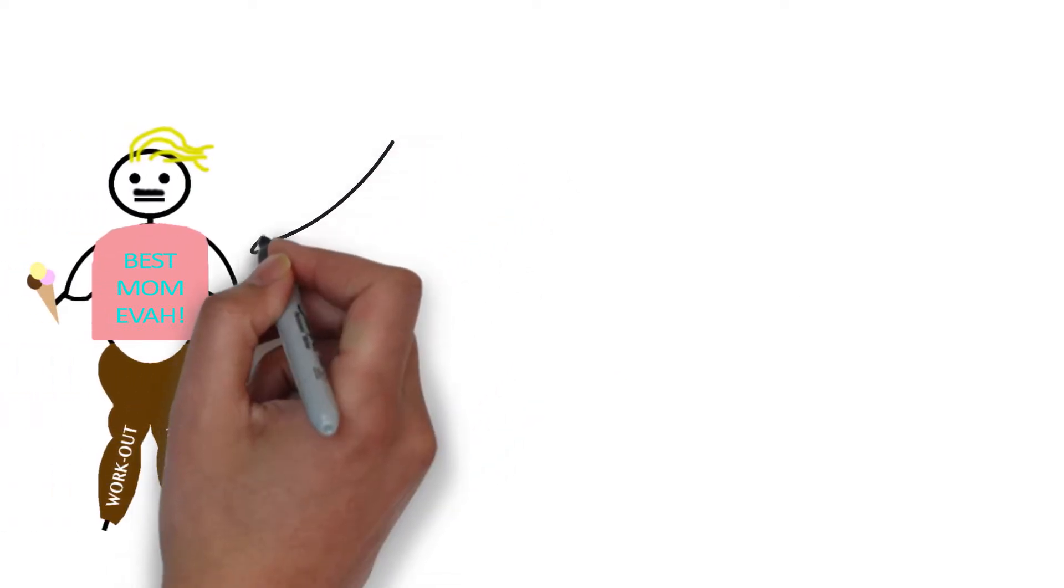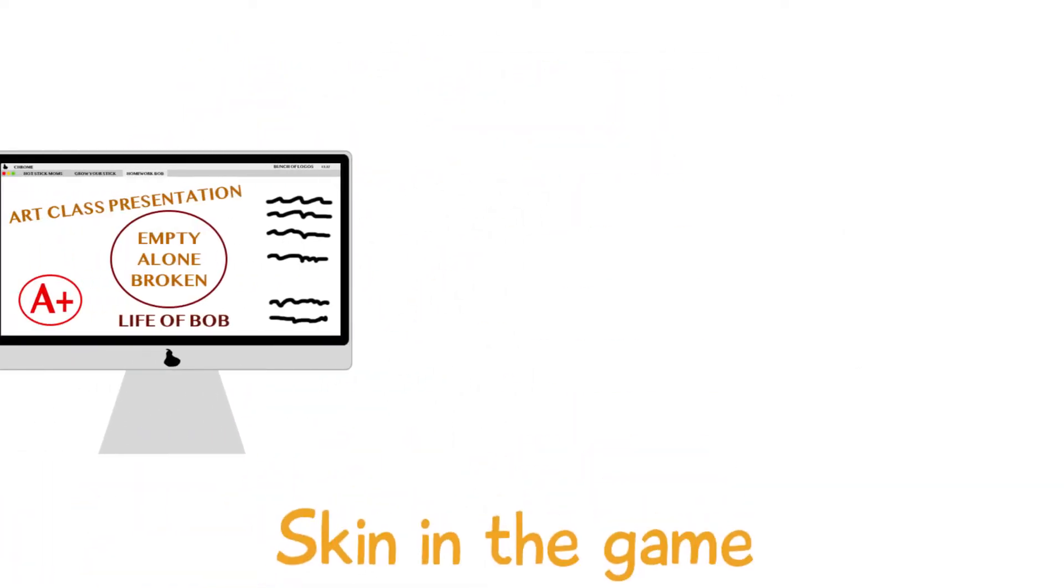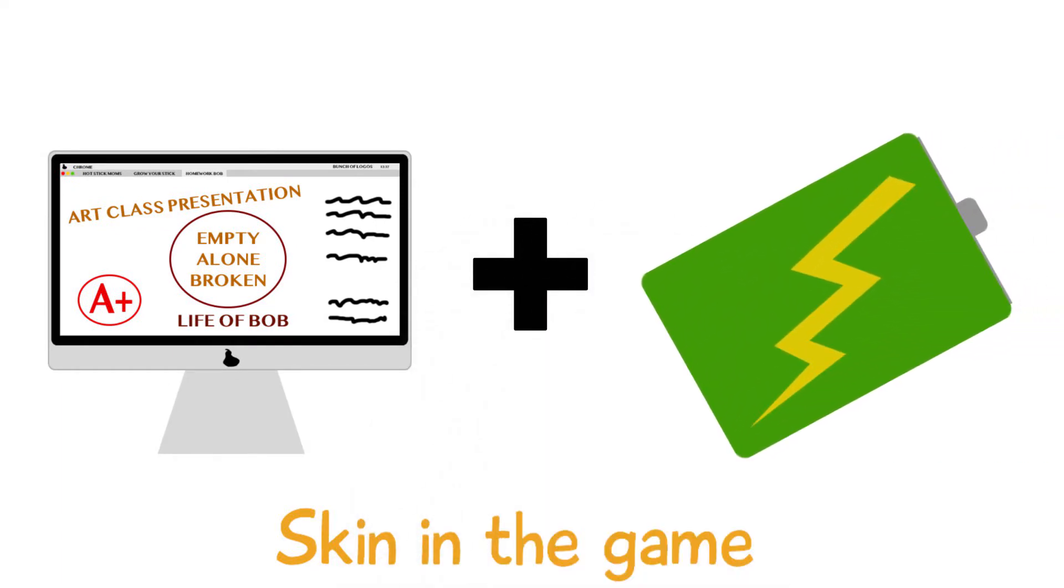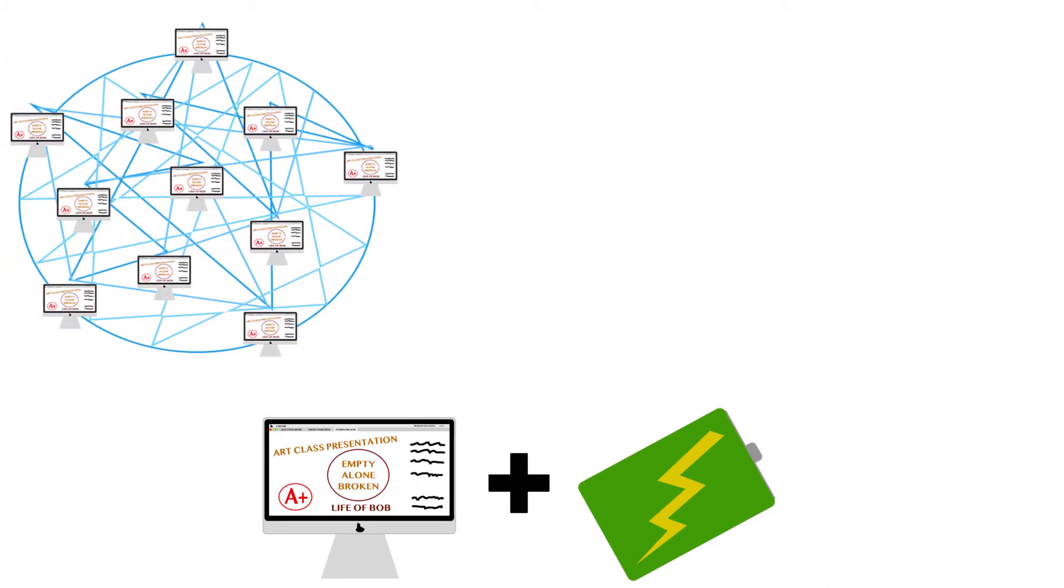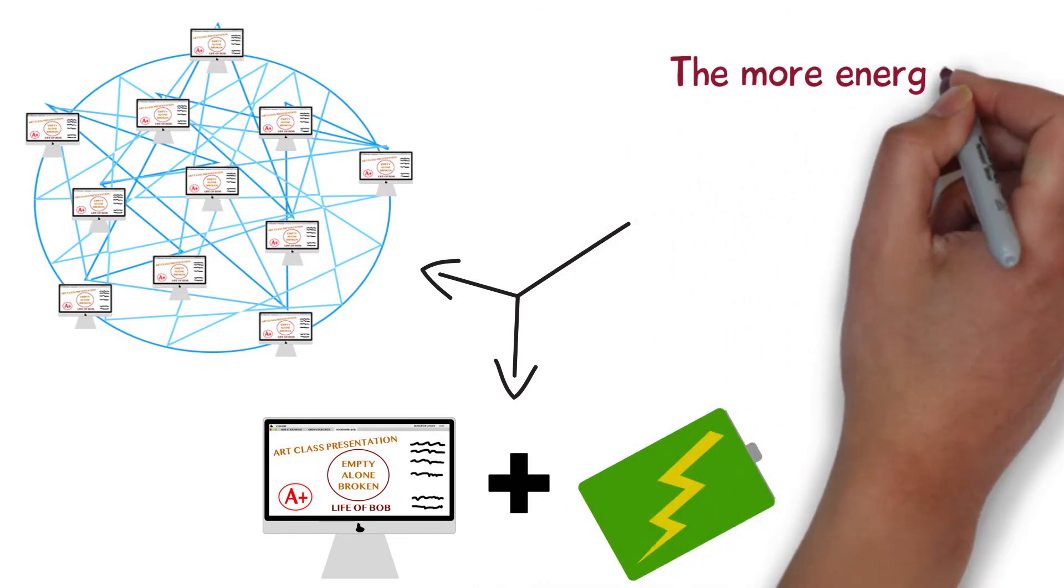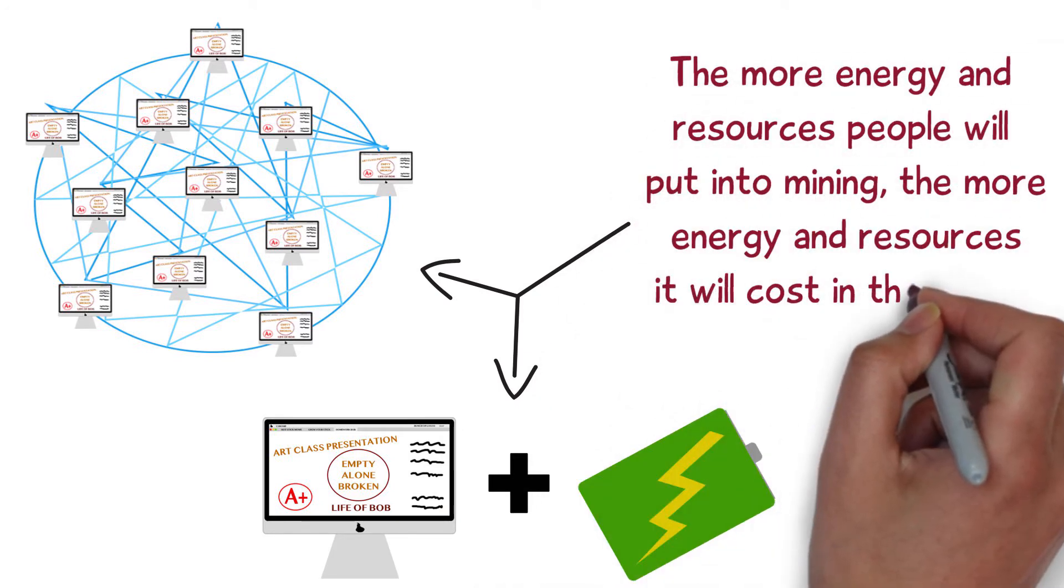The second motivation for proof of work is that of having skin in the game, in this case in the form of resources. Mining requires computational power which is produced by combining hardware with energy. Both of these use resources in the real world. Since the difficulty of mining is adjusted to the total computational power of the network, the more energy and resources people will put into mining the more energy and resources it will cost in the future. So people will want the chain to succeed so they can reap the rewards of creating the blocks.